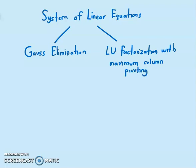Both of these approaches are called direct approach. In your previous class you solved the system of linear equations using iterative approach. Can you recall it now? The two methods that we learned were Jacobi and Gauss-Seidel. This is called iterative method. Now to solve system of linear equations using direct approach there are two methods: Gauss elimination and LU factorization with maximum column pivoting.